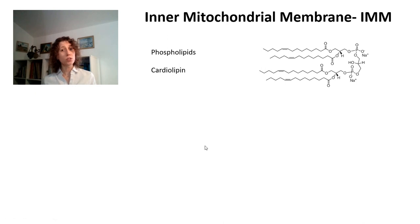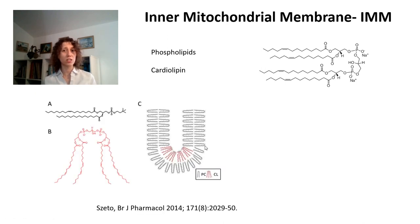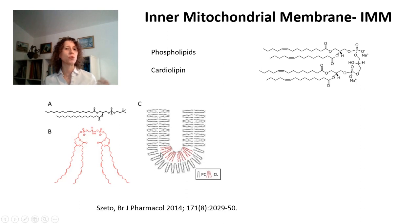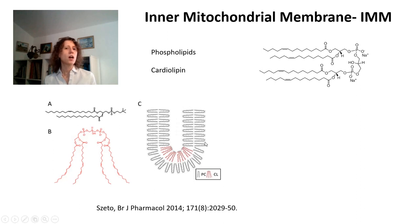Cardiolipin also has a function in the folding of membranes. Because of its characteristic four acyl chains, it tends to accumulate in folds of membranes, such as folds in the crista, while other phospholipids, which only have two acyl chains, will accumulate in other parts of the membrane.